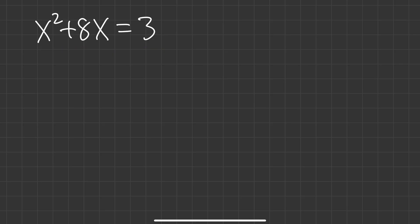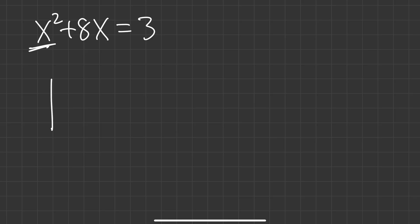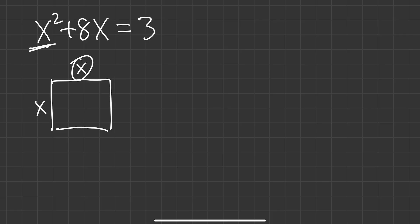We see x squared — what does that really mean? In a geometry point of view, x squared means we have a square, and each side of the square is equal to x. So the area is x times x, which is x to the second power — that's why it's called x squared.